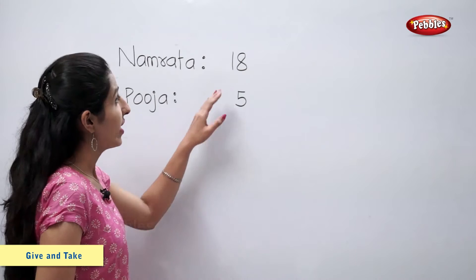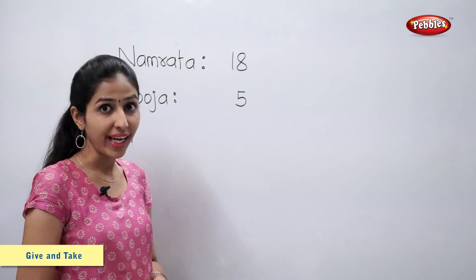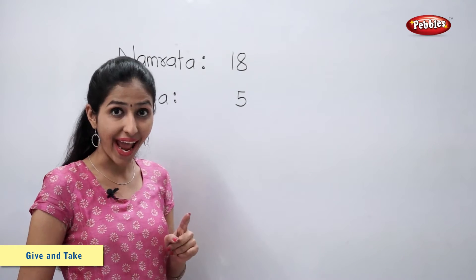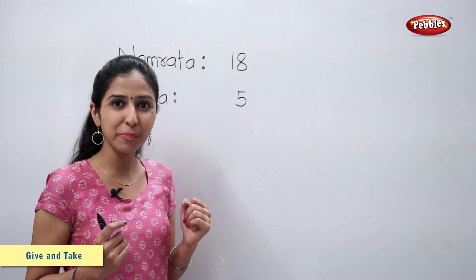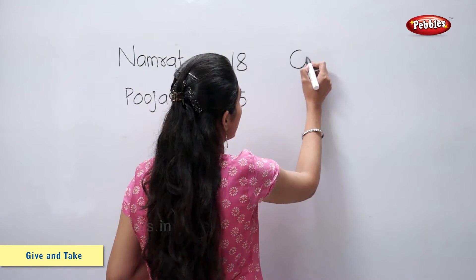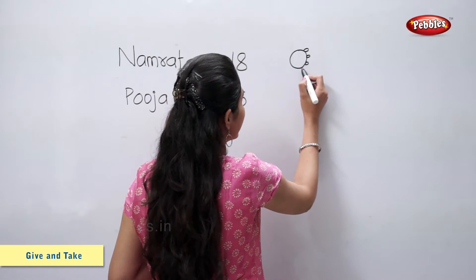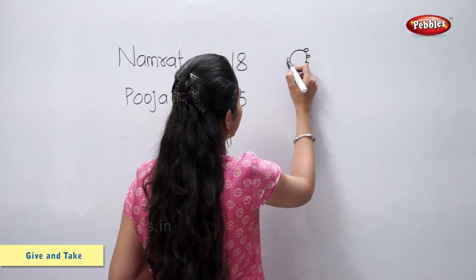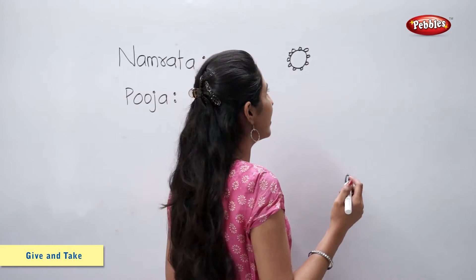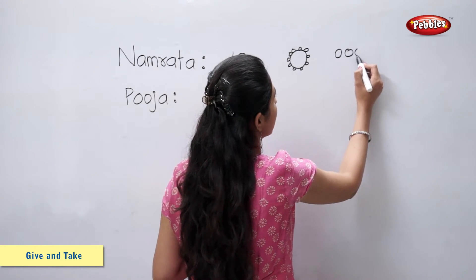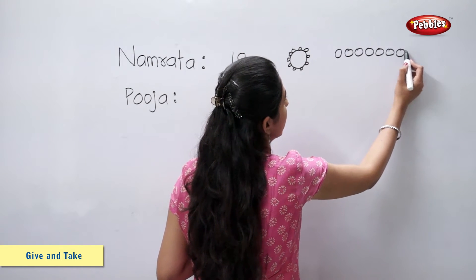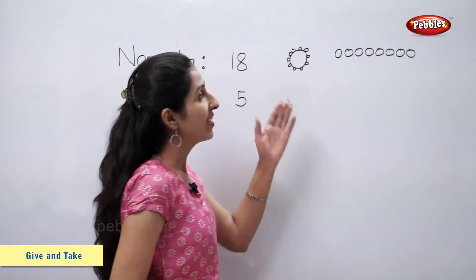Namrata had 18 pearls. That means she had one bangle of 10 pearls and 8 loose pearls. One bangle of 10 pearls and 8 loose pearls — 18 pearls.